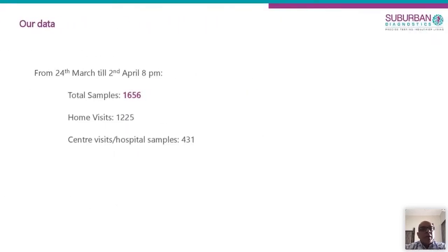As of last night, we have done about 1,700 test collections, of which about three-fourths are home visits and the rest are center and hospital visits. All data must be shared with local authorities — MCGM and ICMR — who collate data from all labs and share positivity rates. Initially when we started, the positivity rate was very high, but as time has progressed, I'm happy to share that the positivity rate has actually come down. The lockdown enforced by the government and well supported by the public is actually helping contain the virus. These were some of my experiences. Thank you, Prakash and Horiba, for giving me this opportunity.